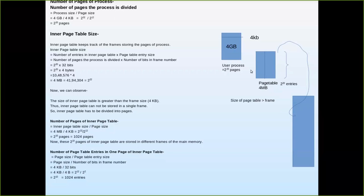We have to divide the page table itself into pages of the same size as the frame. The number of pages of the inner page table = 4MB ÷ 4KB = 2^22 ÷ 2^12 = 2^10 = 1024 pages. So 1024 frames are needed just to store this page table, and these 1024 pages of the inner page table are stored in different frames of main memory.